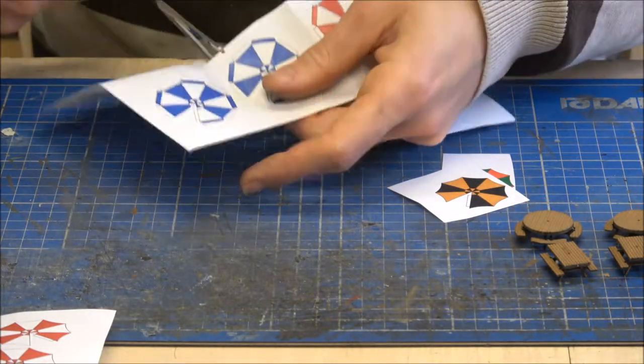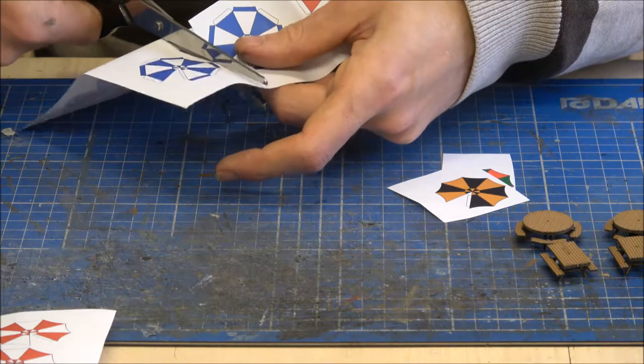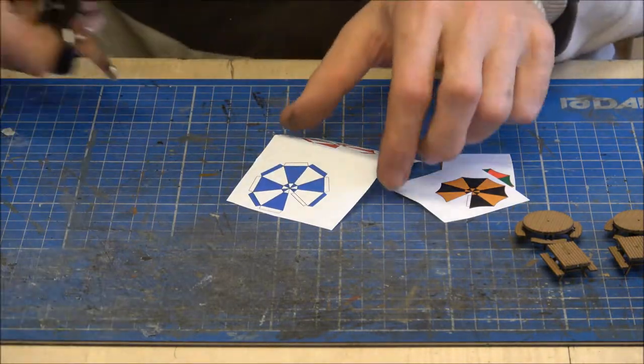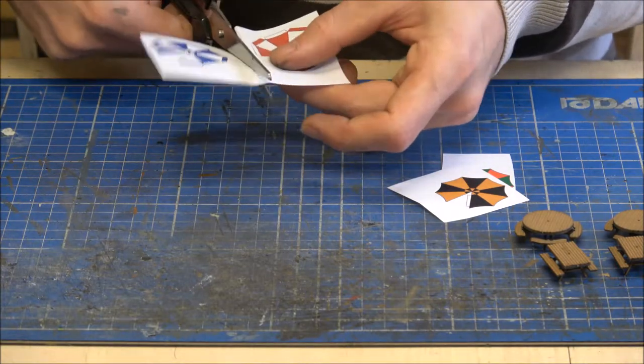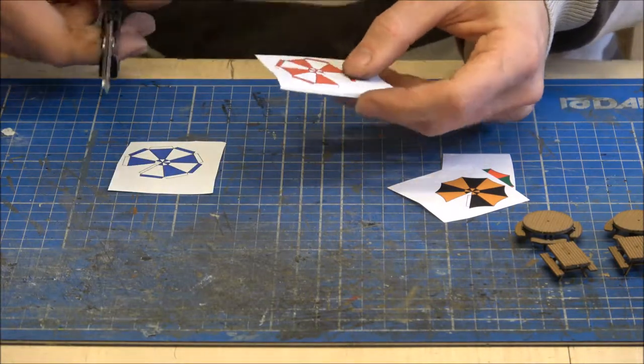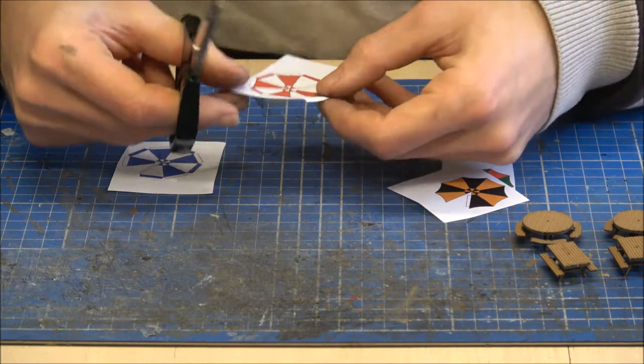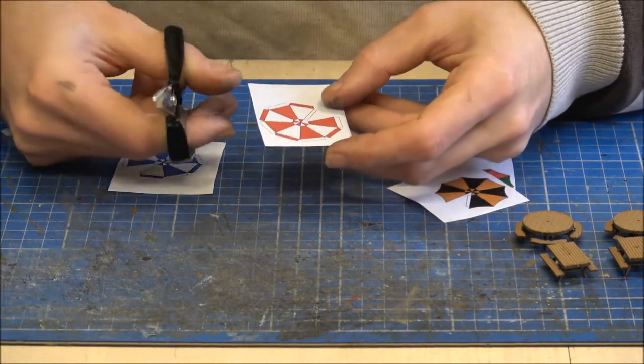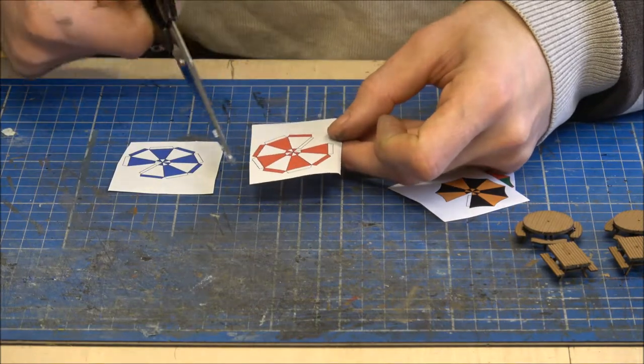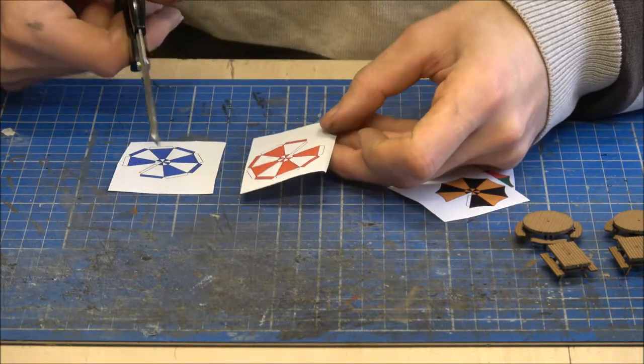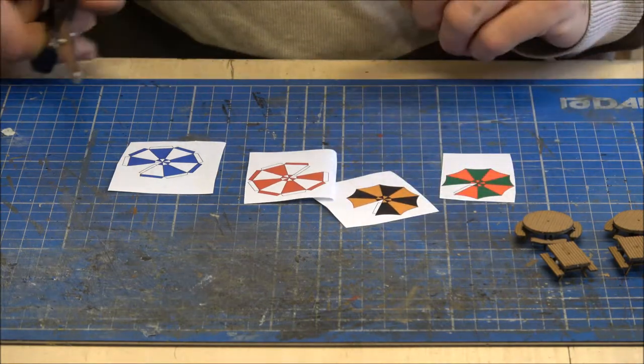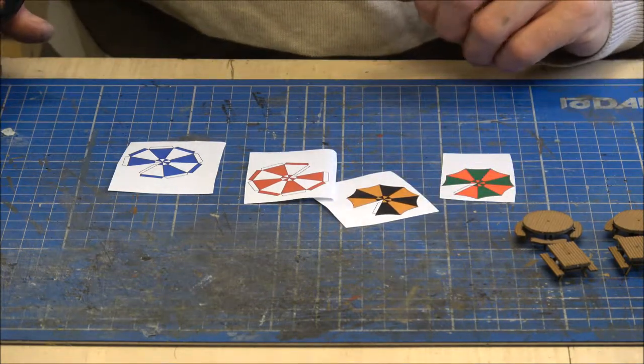Now obviously they've provided enough in the kit so that if you do over-cut something there is another one for you to have a go with. And to cut them out, just use a pair of scissors and just very carefully just follow along the lines. So I'll cut these four out and then we can start putting them together ready to go onto the benches.